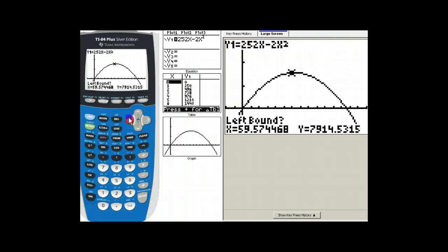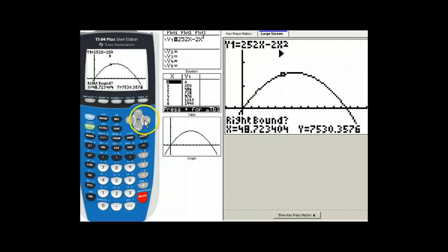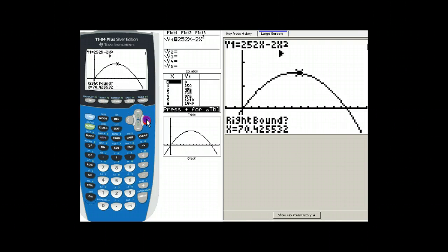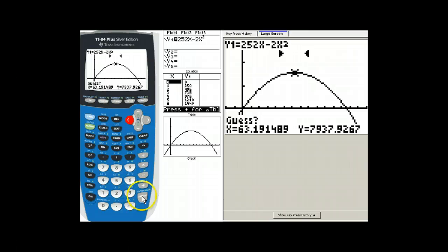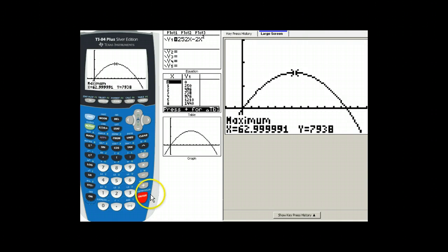Left bound. Put the cursor somewhere to the left of the maximum. Enter. Right bound. Put the cursor somewhere to the right of the maximum. Enter. Guess. Put it right where you think it looks like it is. And we get an answer of 63.